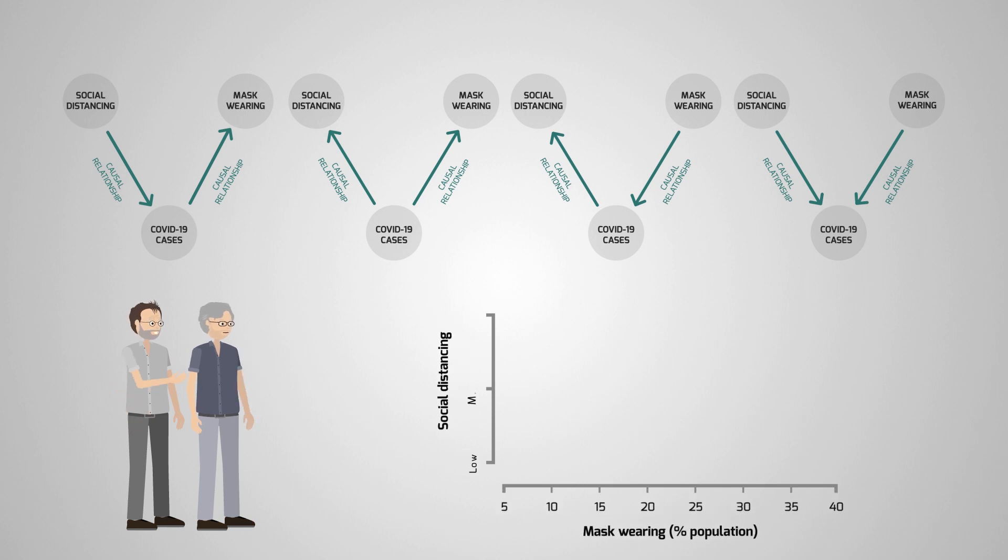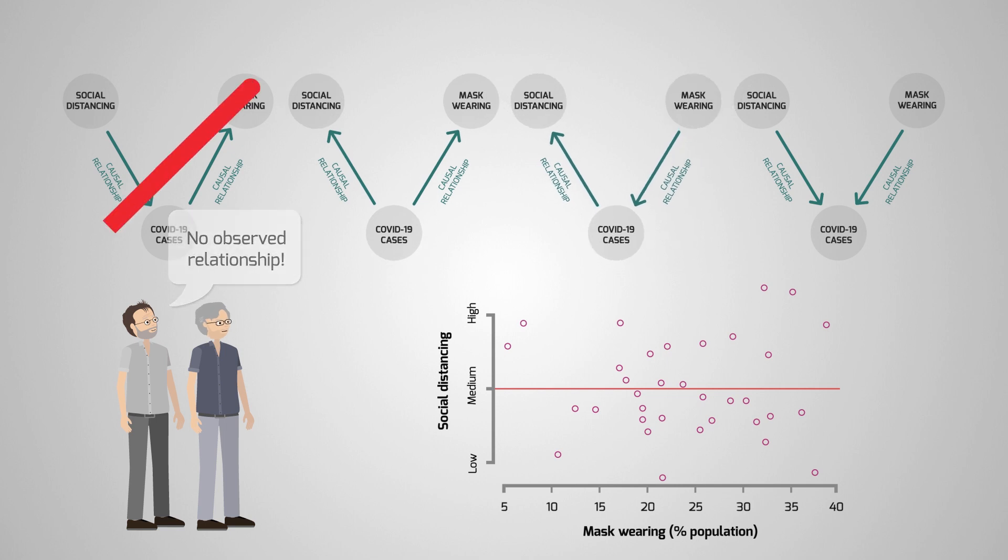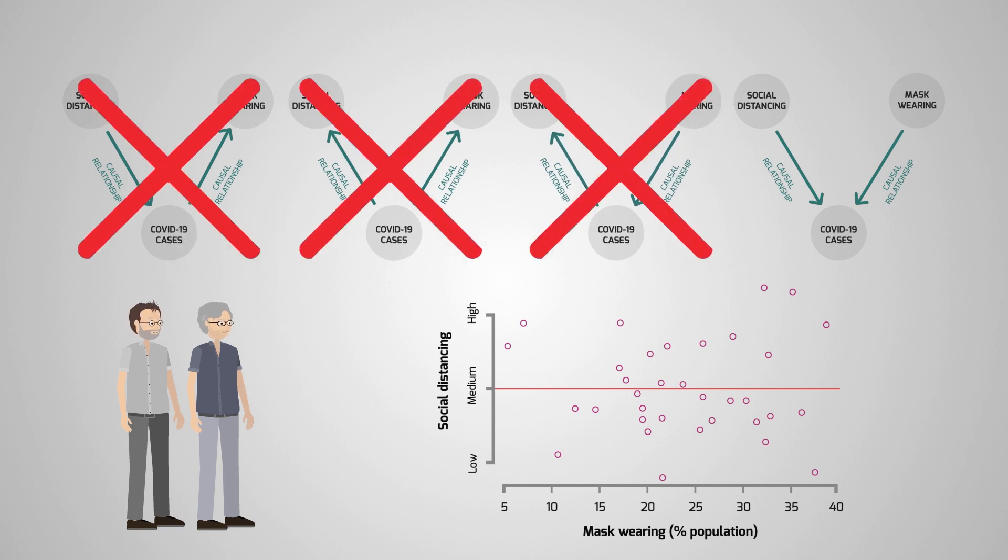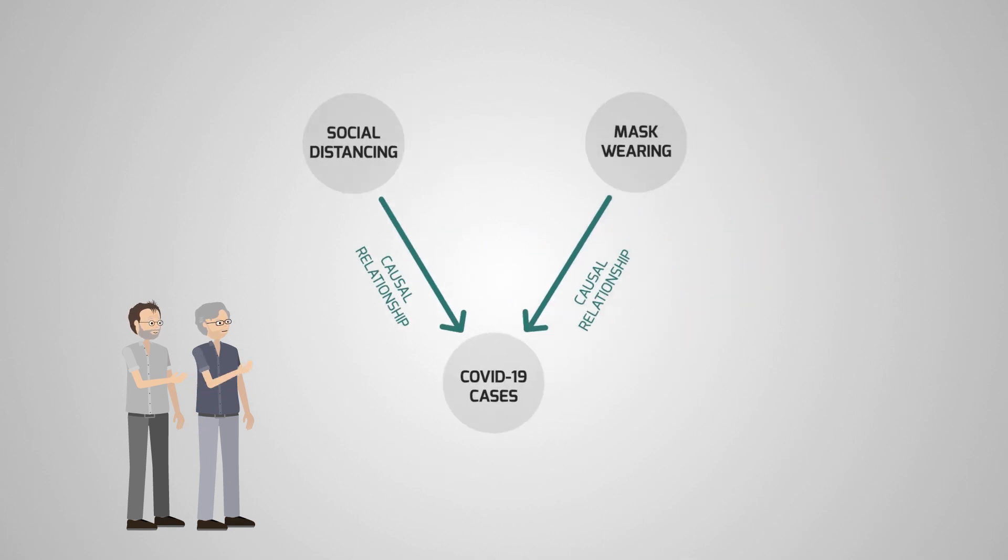However, the first three causal graphs would all lead to an observed relationship between mask-wearing and social distancing, which is not borne out by the data. For this reason, the causal graph has to be this one, since it's the only one that agrees with our observations.